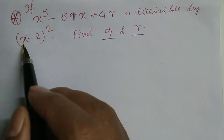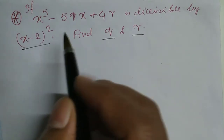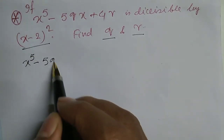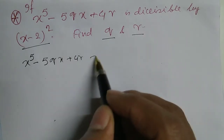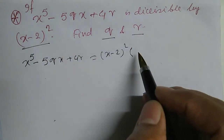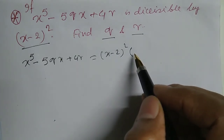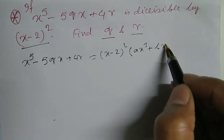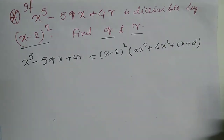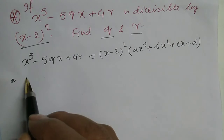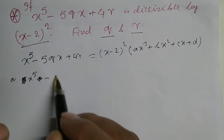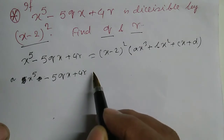Since (x minus 2) squared is a factor, we can write x to the power 5 minus 5qx plus 4r equals (x minus 2) squared into some cubic factor: ax cubed plus bx squared plus cx plus d.